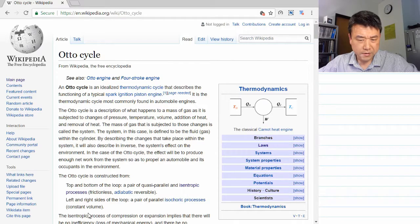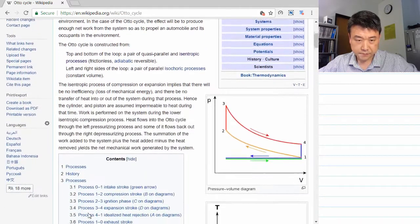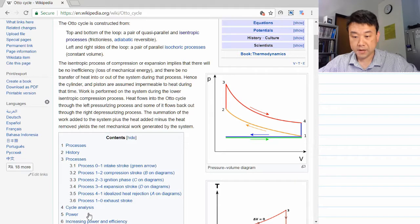For us, what matters is really down here. The Otto cycle is constructed from, and this is the pressure volume diagram for the cycle.